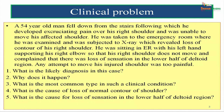Moving on to a clinical problem. A 54-year-old man fell down from the stairs, following which he developed excruciating pain over his right shoulder and was unable to move his affected shoulder. He was taken to the emergency room, where he was examined and subjected to x-ray, which revealed loss of contour of his right shoulder. He was sitting in the ER with his left hand supporting his right elbow so that his right shoulder does not move, and complained that there was a loss of sensation in the lower half of the deltoid region. What is the likely diagnosis in this case?